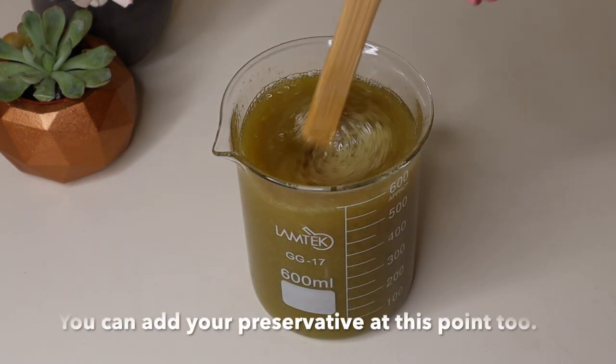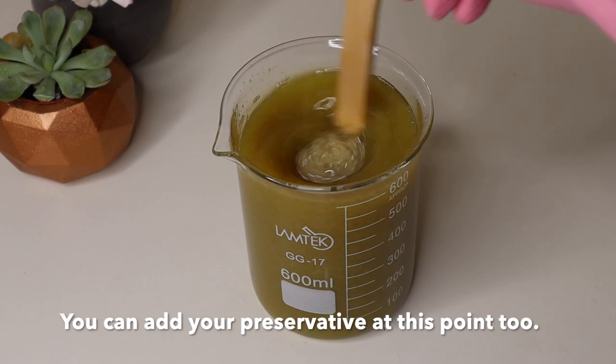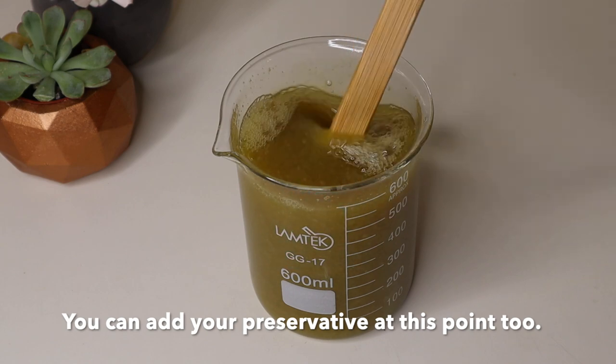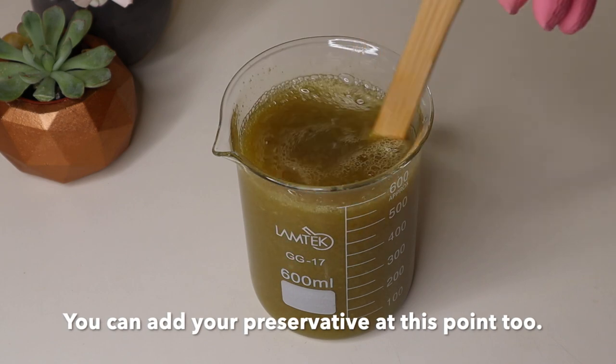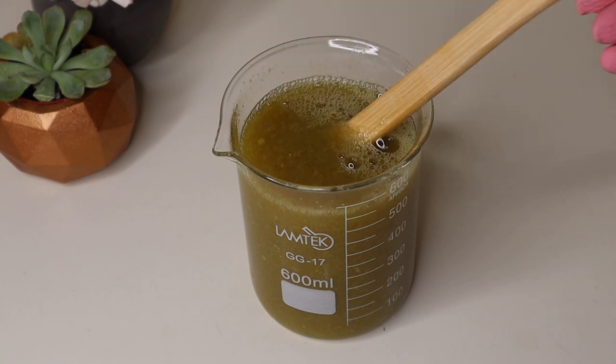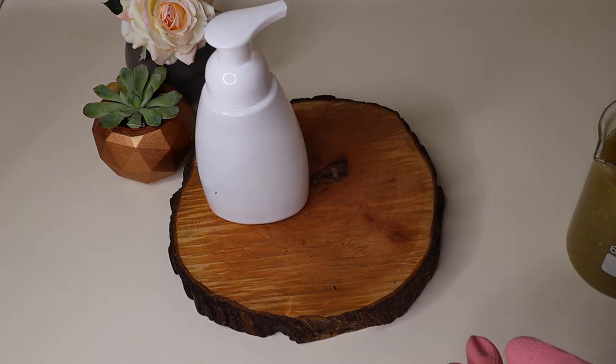Now I had added my castile soap and I'm mixing that up thoroughly. This mixing part is very important. As you can see, it's not a very runny consistency. Now I'm adding my tea tree oil, which also has anti-inflammatory properties and is good for acne. I'm adding some drops and stirring again.